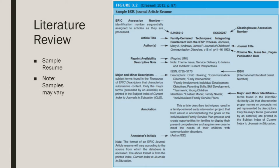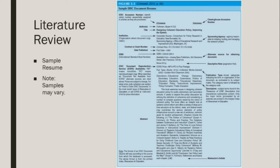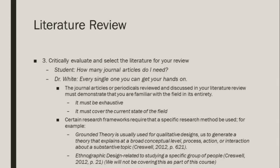Here you can see the various components of a journal article. Step 3: Critically evaluate and select the literature for your review. If you were to ask me how many journal articles you need for your research project, I would tell you that you need every single one that you can get your hands on. The reason for this is so that you become an expert on your subject and can identify gaps in the research. It is those gaps in the research that will shape your project.